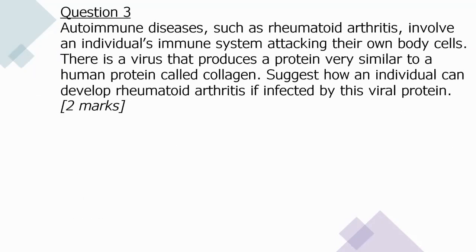Question three: autoimmune diseases such as rheumatoid arthritis involve an individual's immune system attacking their own body cells. There is a virus that produces a protein very similar to the human protein collagen. How can an individual develop rheumatoid arthritis if affected by this viral protein (two marks)? The immune system will be confused — an antibody specific to the viral antigen may accidentally bind to collagen, the similar human protein, causing destruction of collagen and human body cells.